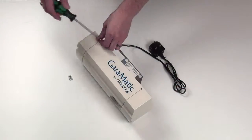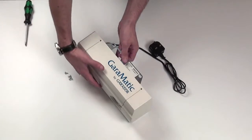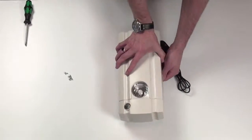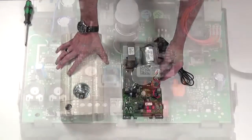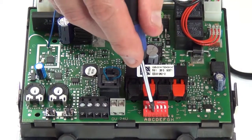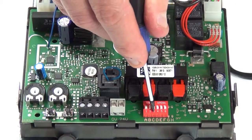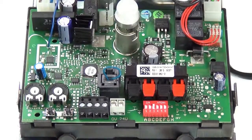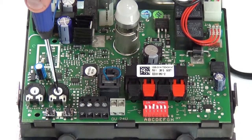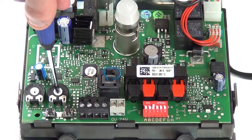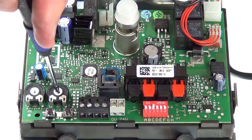Next, undo the four screws and remove the outer cover on the operator unit. Locate the printed circuit board and turn the dip switch marked C to the on position. Then turn the adjuster marked P2 clockwise to maximum.